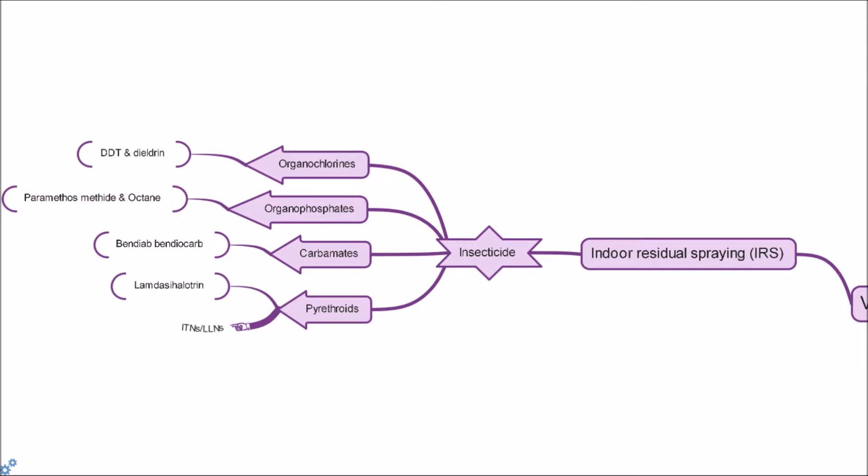IRS involves coating the walls and other surfaces of a house with residual insecticide. Choice and type of insecticide depends on vector biology and resistance of target mosquitoes. Examples of these insecticides that have been used for malaria vectors: organochlorines, organophosphates, carbamates, and pyrethroids.